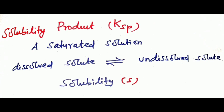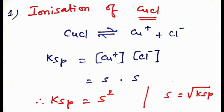Consider the ionization of copper chloride, CuCl. The solubility product Ksp equals the Cu⁺ concentration multiplied by the Cl⁻ concentration. We assume the Cu⁺ solubility is S, and Cl⁻ is also S.